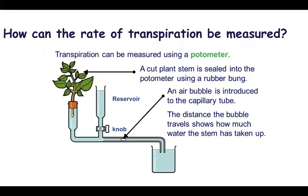How can the rate of transpiration be measured? If we don't want to measure the weight of water lost but want to measure the rate of transpiration, it can be measured using a device called a potometer. A potometer in general uses a cut twig placed in a container of water, and this draws in an air bubble. The air bubble moves up to a particular length in the capillary tube. We calculate the distance moved per unit time, which will be equal to transpiration. So the distance moved per unit time is actually the rate of uptake of water, which is almost equal to the amount of transpiration.